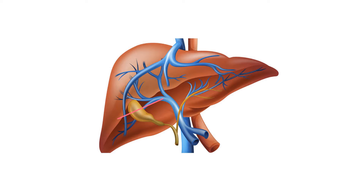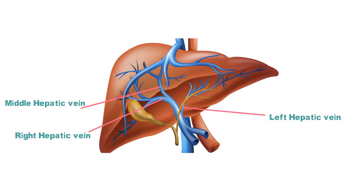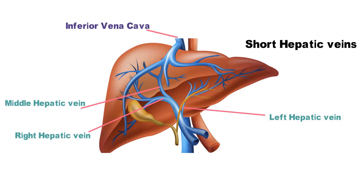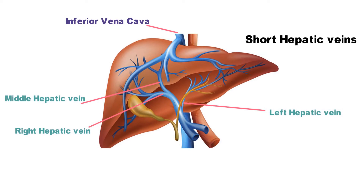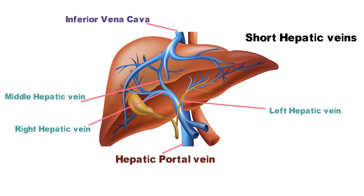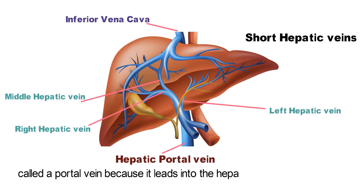The hepatic portal vein allows blood from all major organs of the gastrointestinal tract to enter the liver through one vein. Once in the liver, the hepatic portal vein branches into right and left hepatic veins and a smaller middle or intermediate vein. There are also small hepatic veins referred to as short hepatic veins. All of these hepatic veins eventually drain into the inferior vena cava.